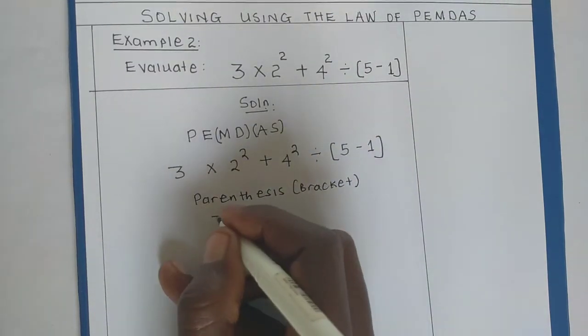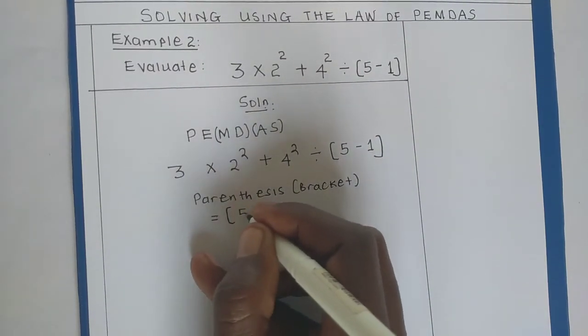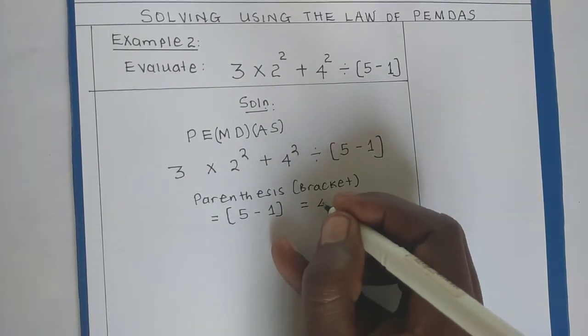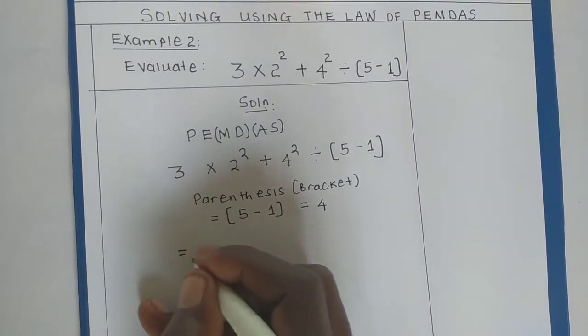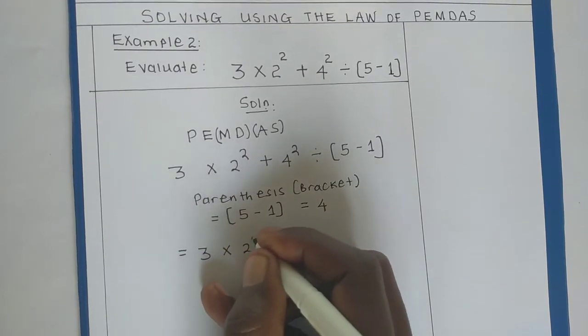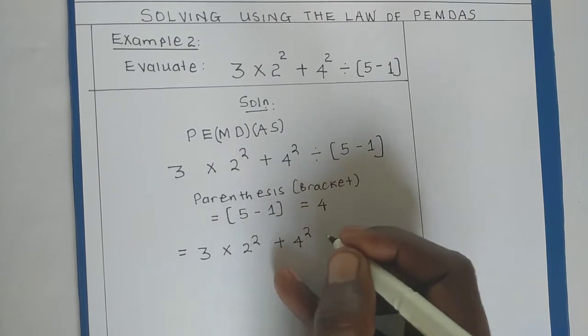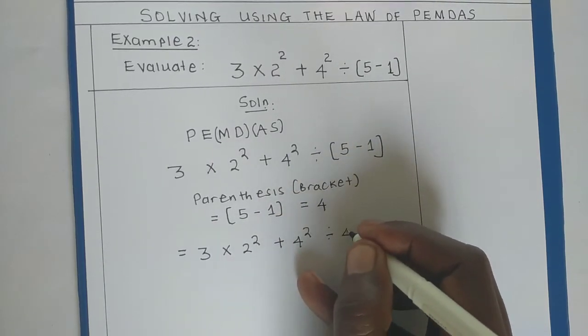Let's express, so we shall have 5 minus 1, which will give us 4. So, resulting into 3 times 2 to the power of 2 plus 4 squared, we are dividing it by 4.